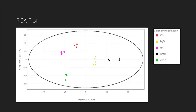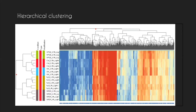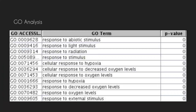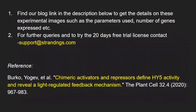Next, hierarchical clustering of samples. GO analysis was performed and the top GO processes identified are shown in this table. Find our blog link in the description below to get details on these experimental images such as the parameters used and number of genes expressed. For further queries and to try the 20-day free trial license, contact support@strandngs.com.